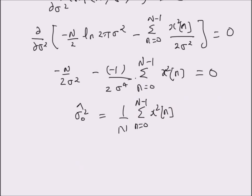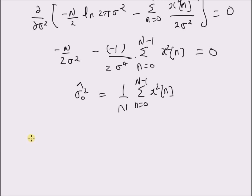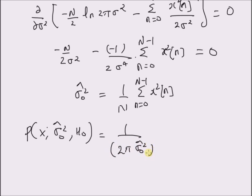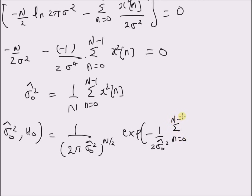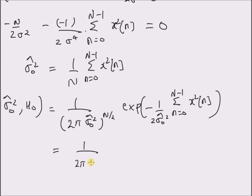Now we use this result to construct the denominator in the generalized likelihood ratio. The probability distribution with the MLE estimate of sigma squared under H0 is (1/(2π σ₀²-hat))^(N/2) × exp(−(1/(2σ₀²-hat)) Σ x²(n)). Since the sum of x²(n) = N × sigma-zero-squared-hat, this distribution simplifies to (1/(2π σ₀²-hat))^(N/2) × exp(−N/2).